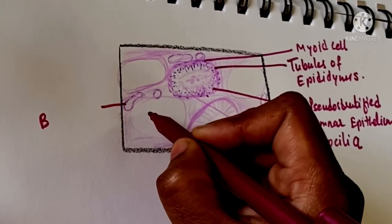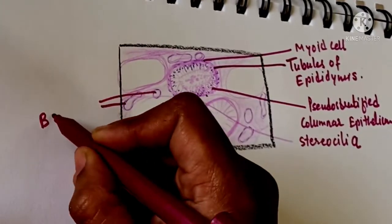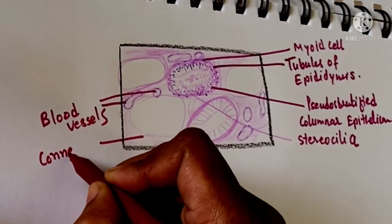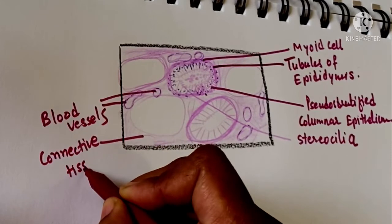Epididymis is so long that it takes a month for the sperm to make the journey.